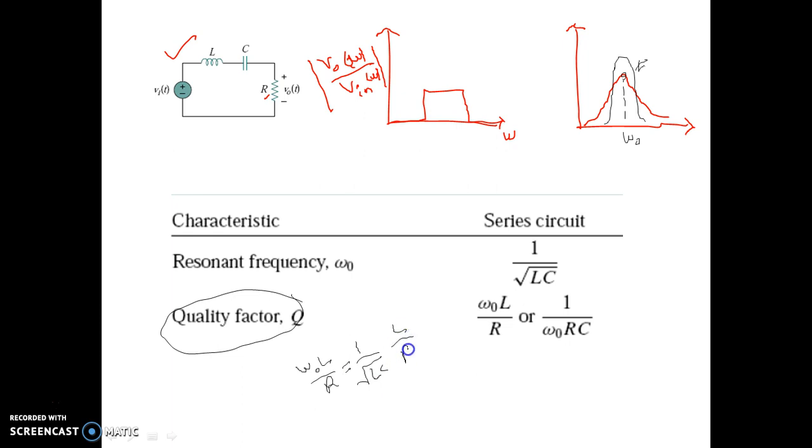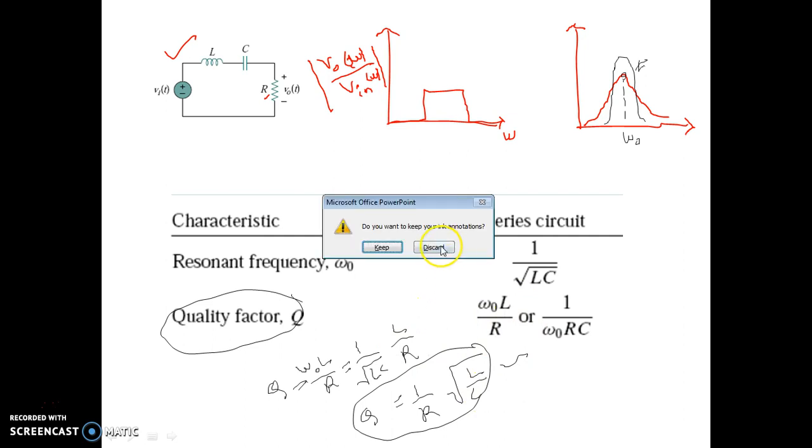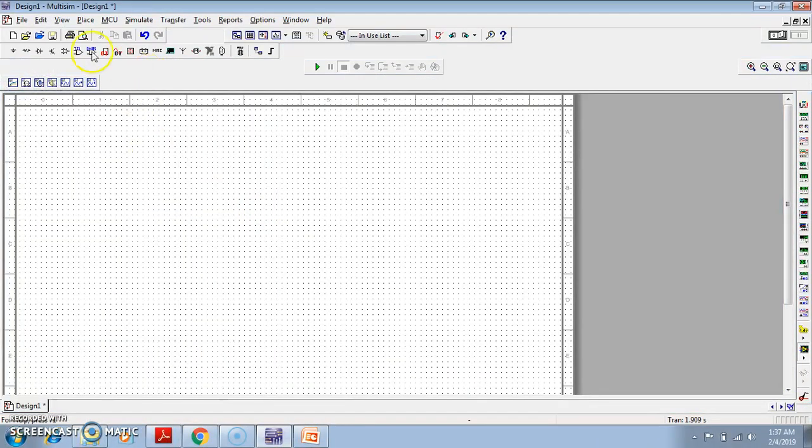I have just put the formula of omega naught, and if you simplify this you will get 1 by R root over of L by C. This is another expression of Q. I hope you have understood this. Please try to remember it because it will help you somewhere. Q is equal to 1 by R root over of L by C.